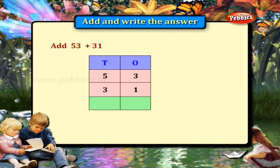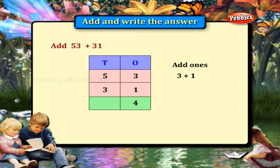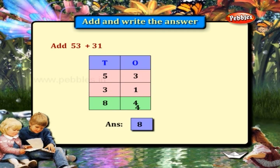53 plus 31. Add the 1's place: 3 plus 1 is equal to 4. Add the 10's place: 5 plus 3 is equal to 8. Answer: 84.